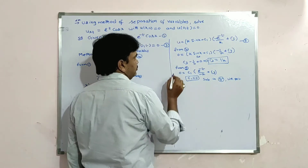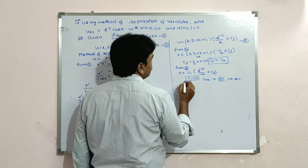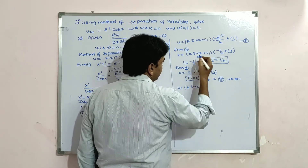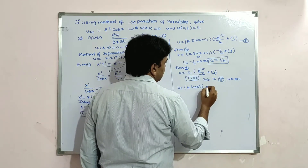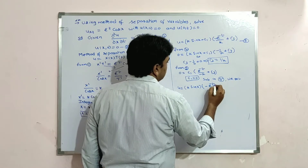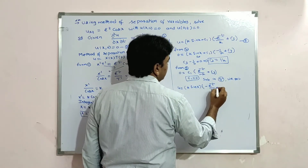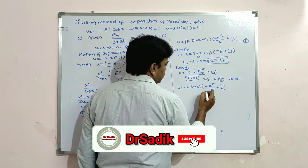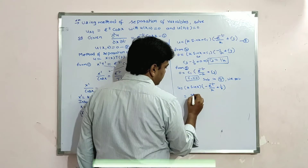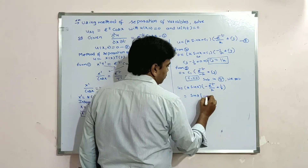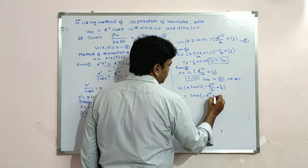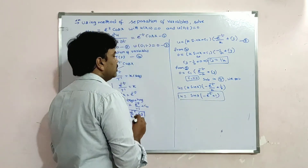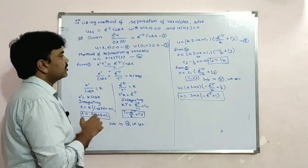Substituting c₁ = 0 and c₃ = 1/k back into equation 5: u = k·sin(x)·(−e^(-t)/k + 1/k). The k's cancel, giving the required solution: u = sin(x)·(1 − e^(-t)).